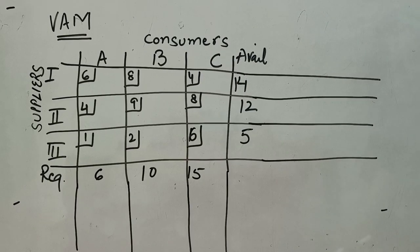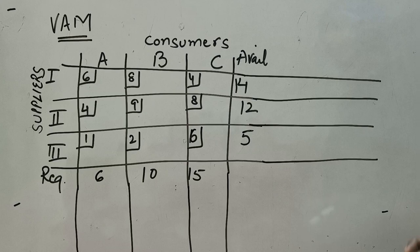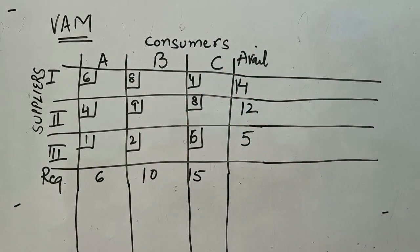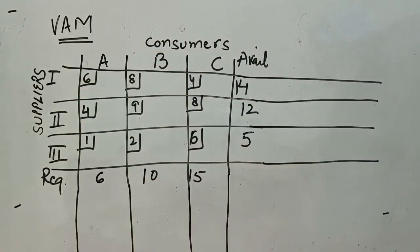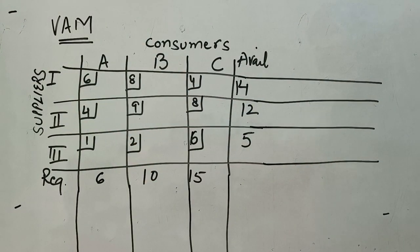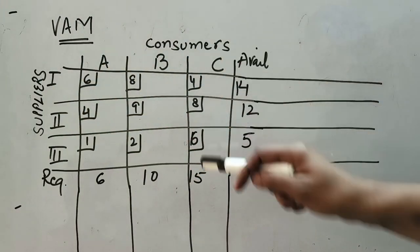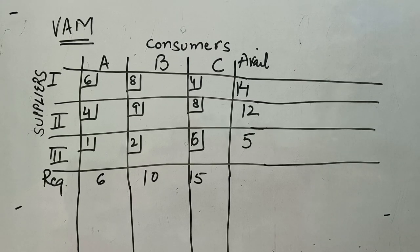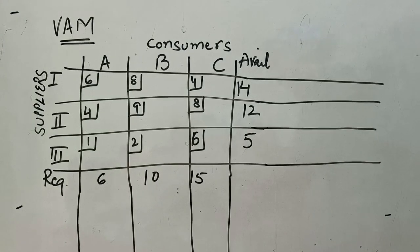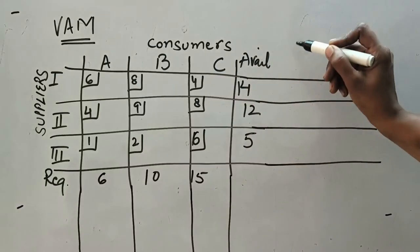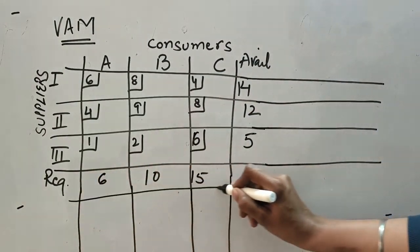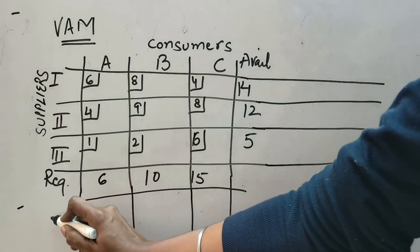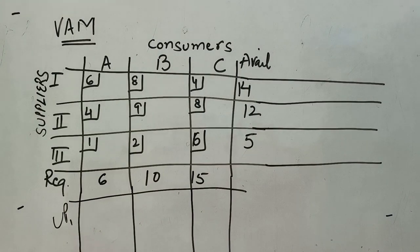Now let us see one practical question to understand VAM properly. The problem has three consumers A, B, C and three suppliers. We have to find the optimal transportation cost from suppliers to consumers using Vogel's Approximation Method. We will start by calculating the unit penalties — we can start either from the rows or the columns. I am going to calculate the unit penalties from the rows first, so I will write UP1 here.